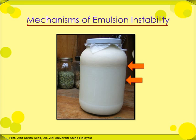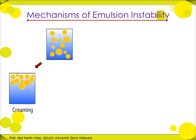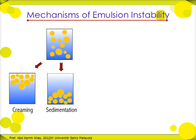Let's start by looking at creaming and sedimentation. This process results from external forces, usually gravitational or centrifugal. When such forces exceed the thermal or Brownian motion of the droplets, a concentration gradient builds up in the system, such that the larger droplets move more rapidly — either to the top if their density is less than that of the medium, or to the bottom if their density is greater than that of the medium.